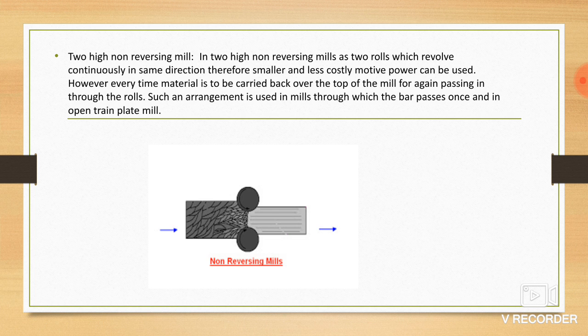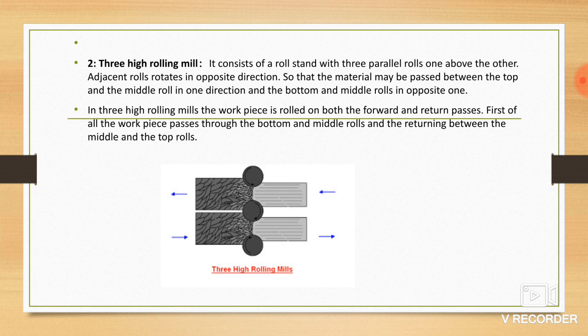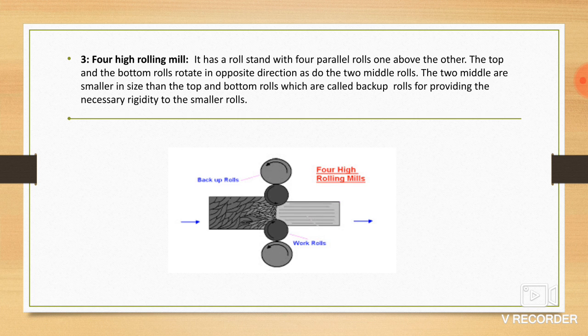Second, three high rolling mill. It consists of a roll stand with three parallel rolls, one above the other. Adjacent rolls rotate in opposite directions so that the material may be passed between the top and middle rolls in one direction and the bottom and middle rolls in the opposite ones. In three high rolling mills, the workpiece is rolled on both the forward and return passes. This is the diagram of three high rolling mill.